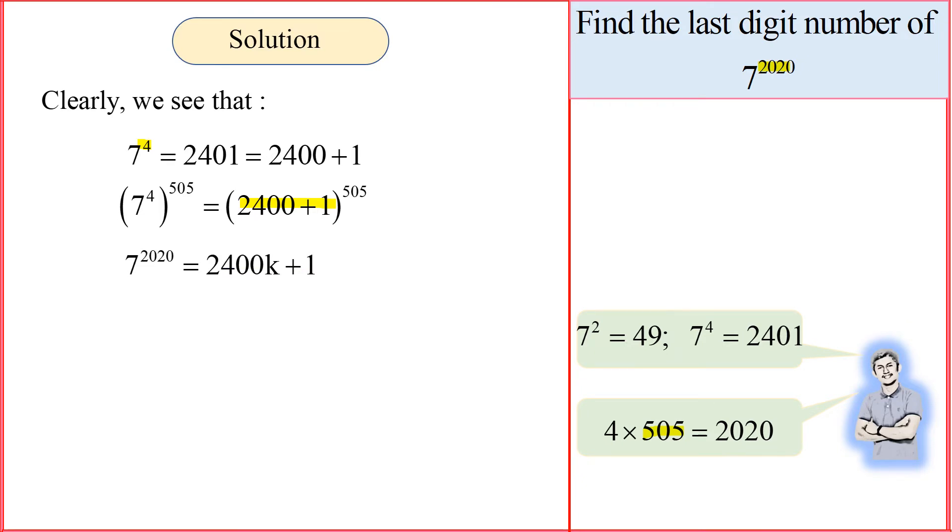So in this expression, I could write it into 7 to the 2020, and this one 2400k plus 1. You might have a question: hey, where is k? Where is k?